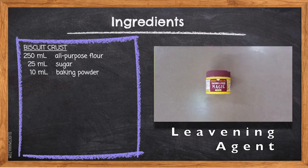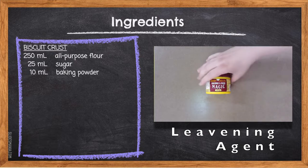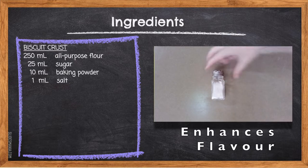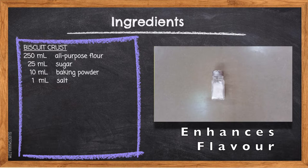10ml Baking Powder — a leavening agent that, when combined with a liquid, will help produce carbon dioxide gas needed to leaven our biscuits. 1ml Salt — salt enhances natural flavors found within any recipe. Today's filling features both brown sugar and cinnamon, and the salt will help make it shine through.